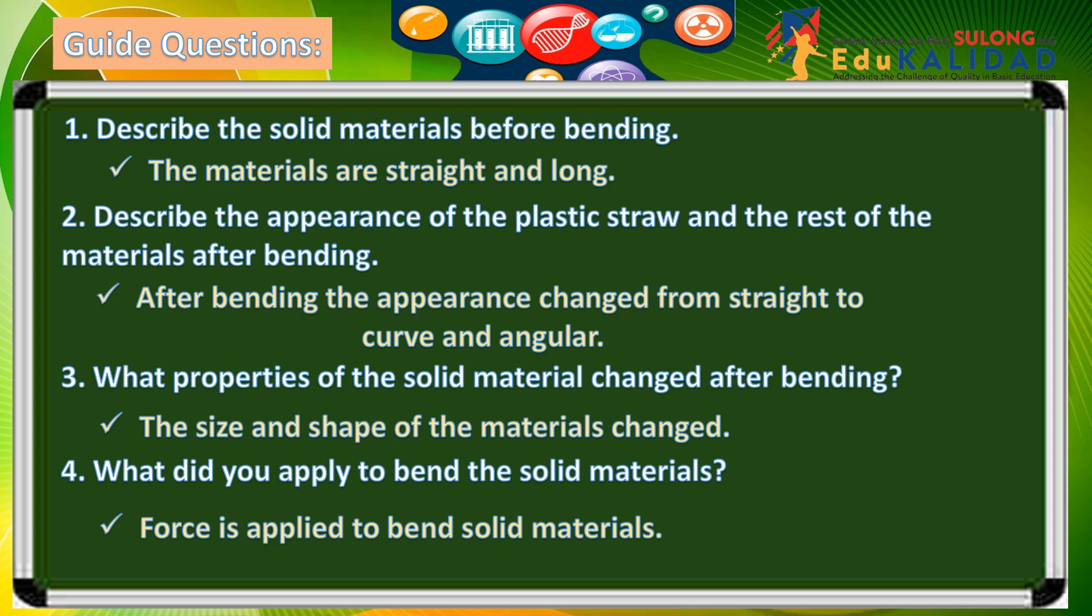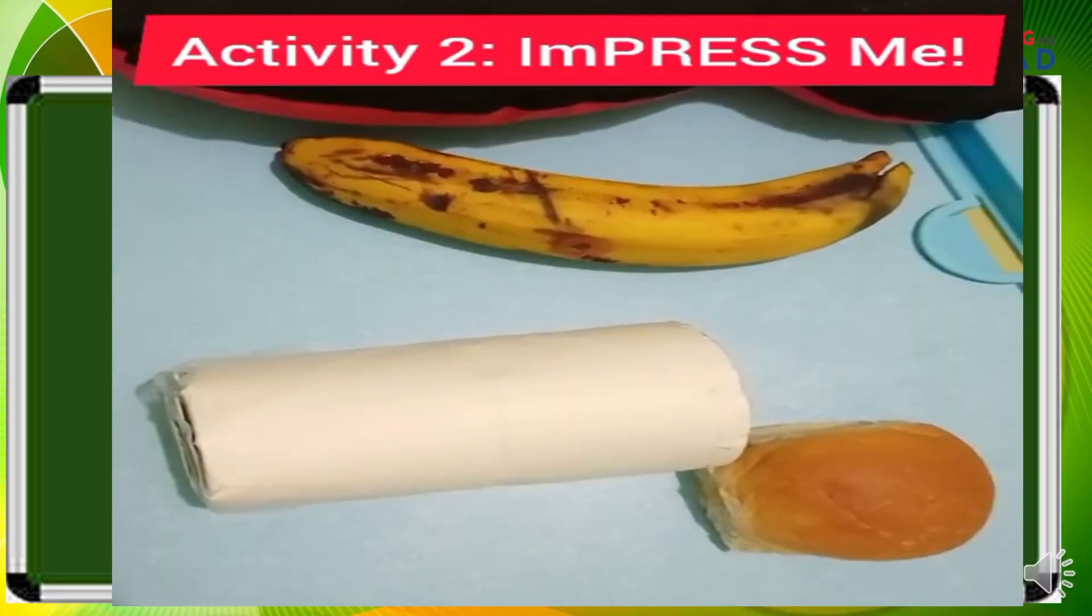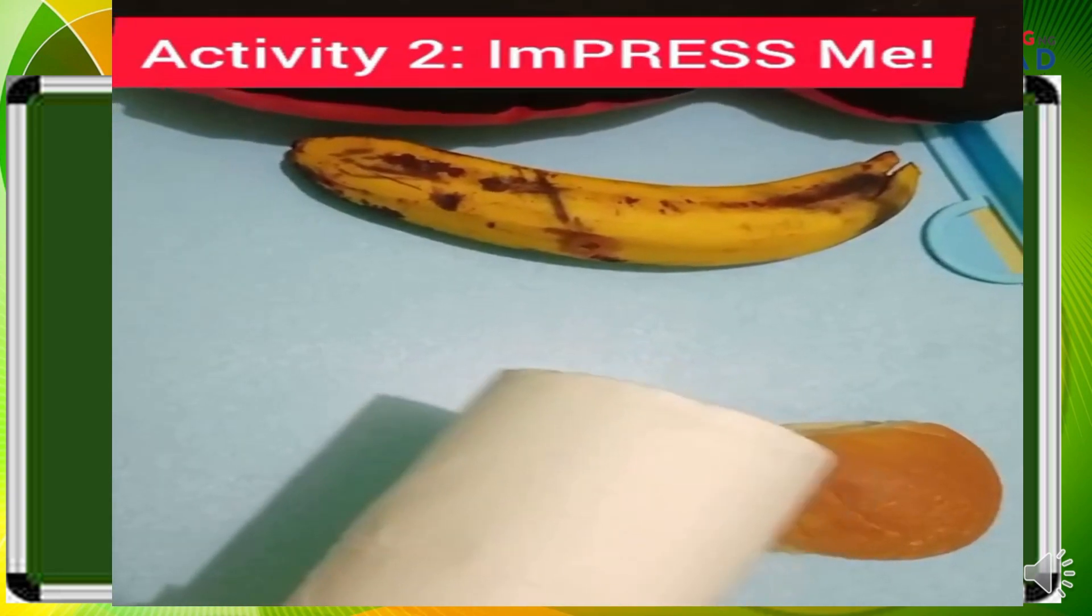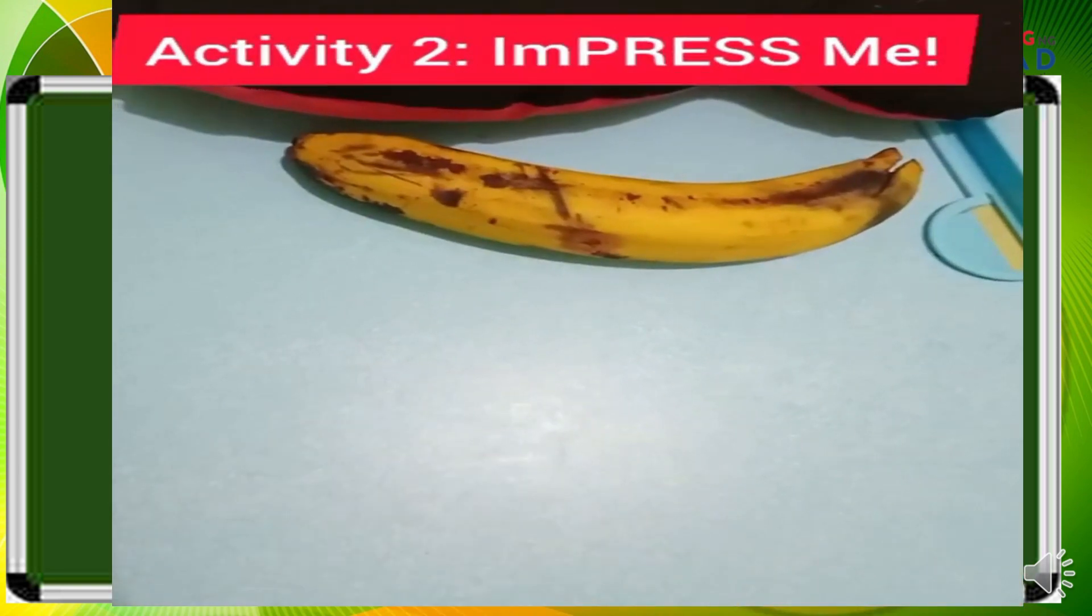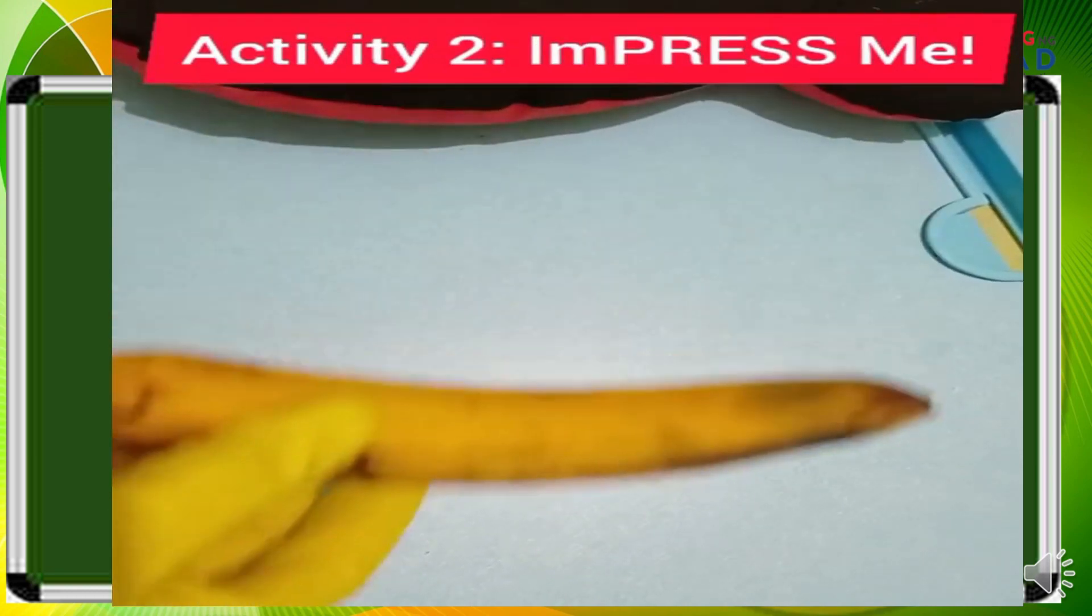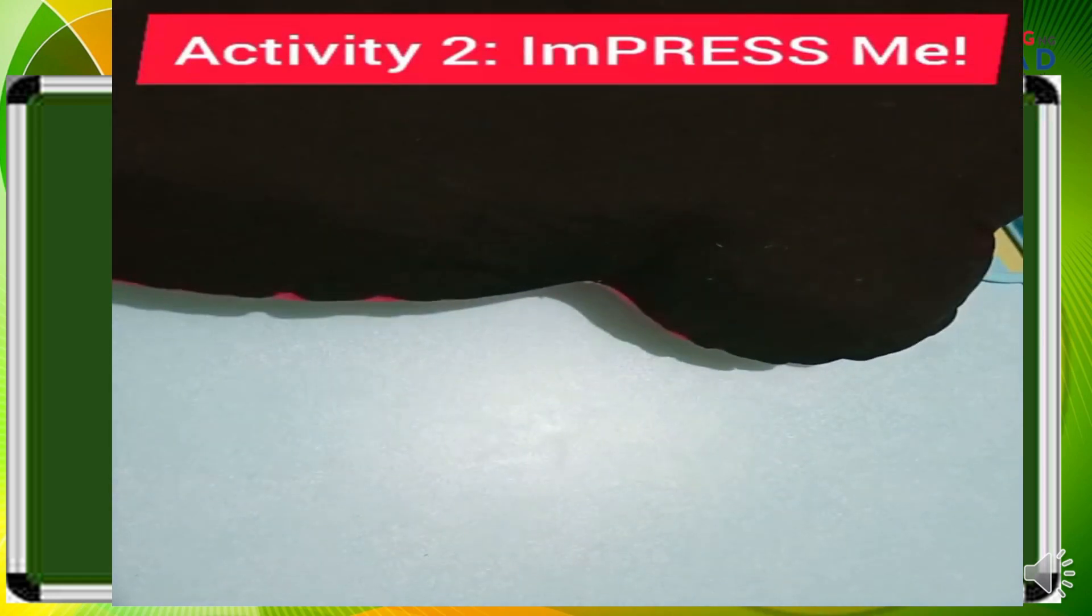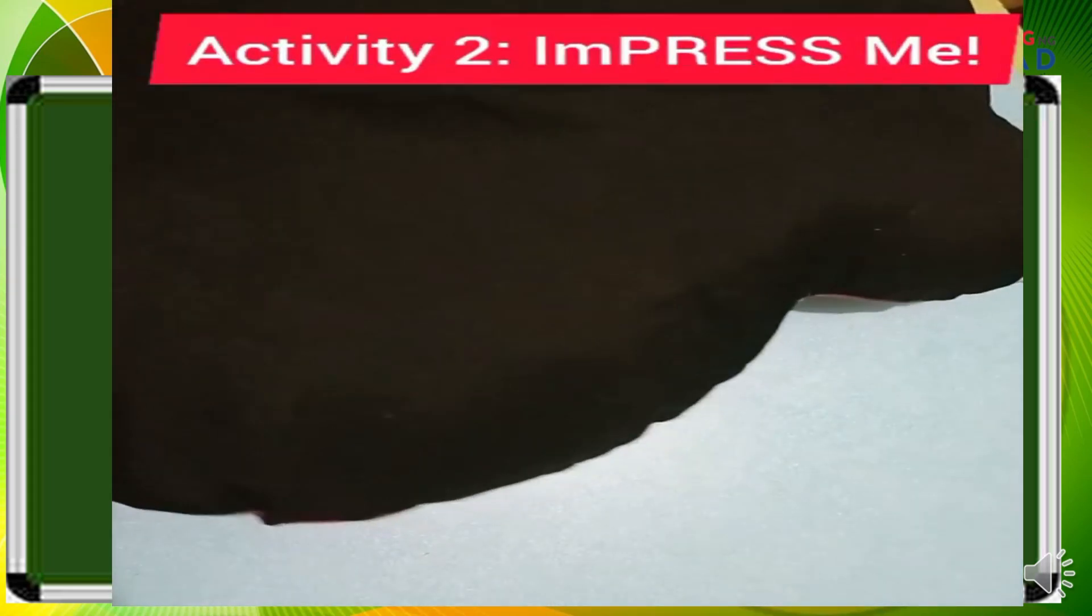Do you get all the numbers right? Good. Let us now proceed to activity number 2: ImPRESS Me. These are the materials needed: plastic or paper cup, pandesal, banana, pillow, and wrinkled cloth. We will use this heavy empty cup to press each of these materials.